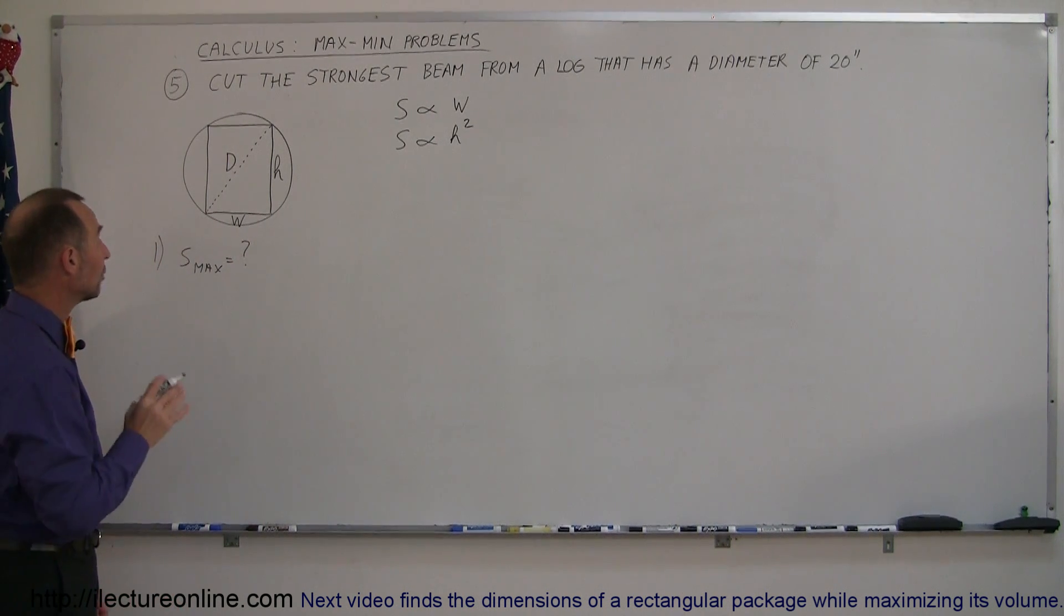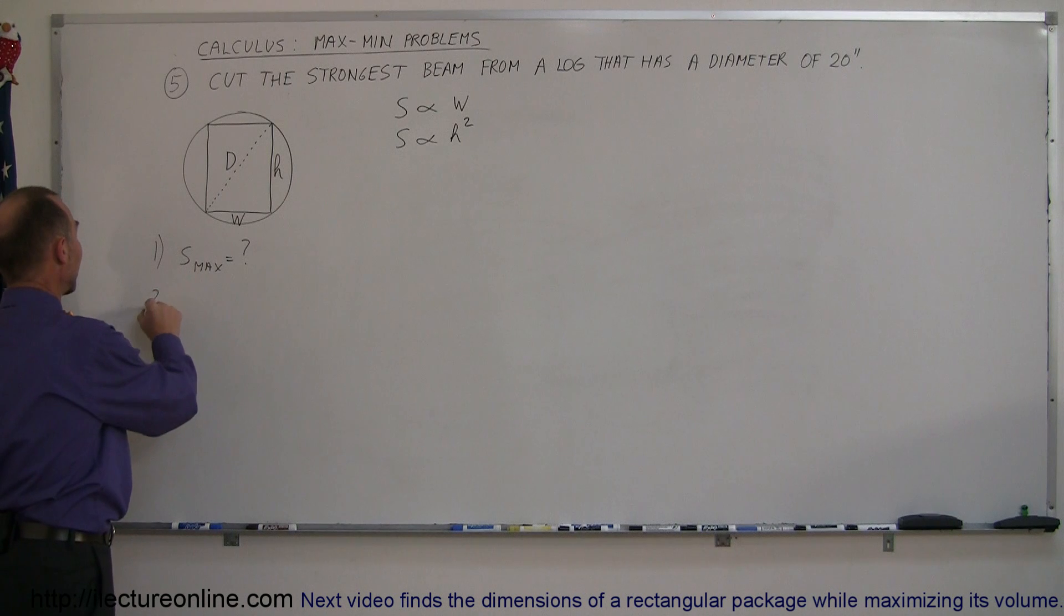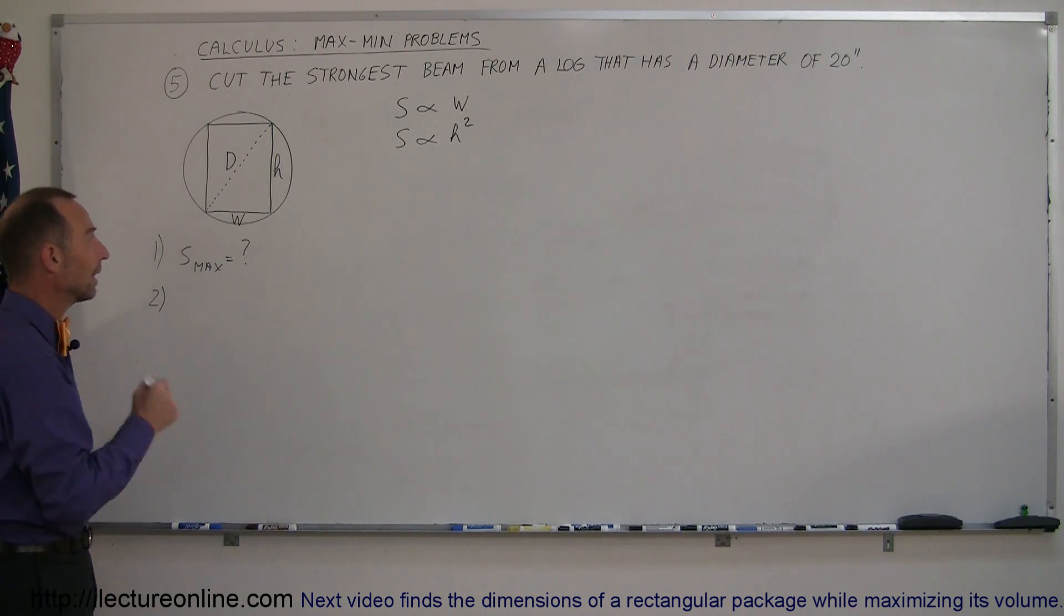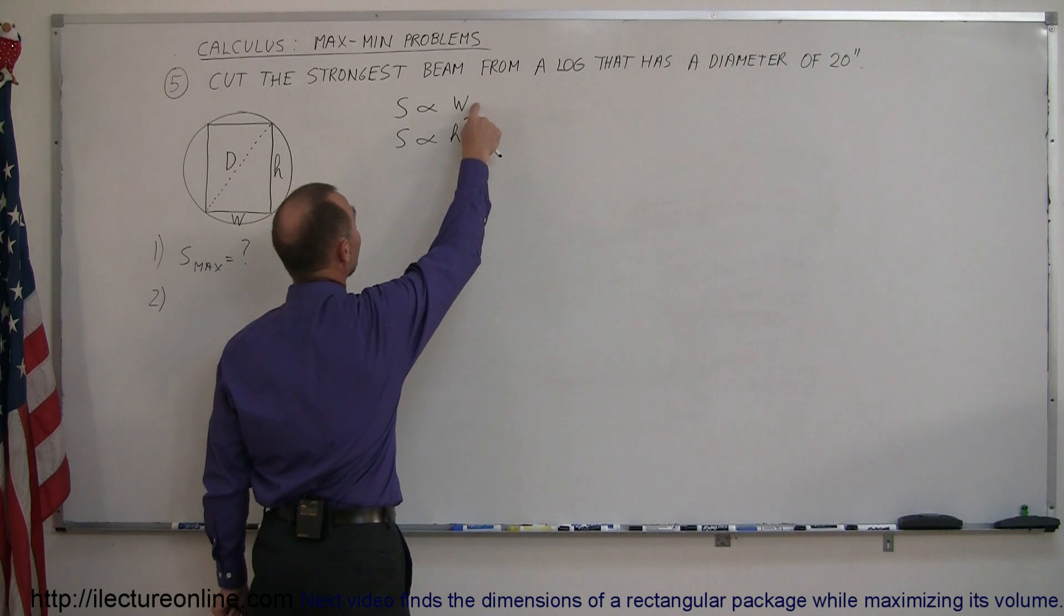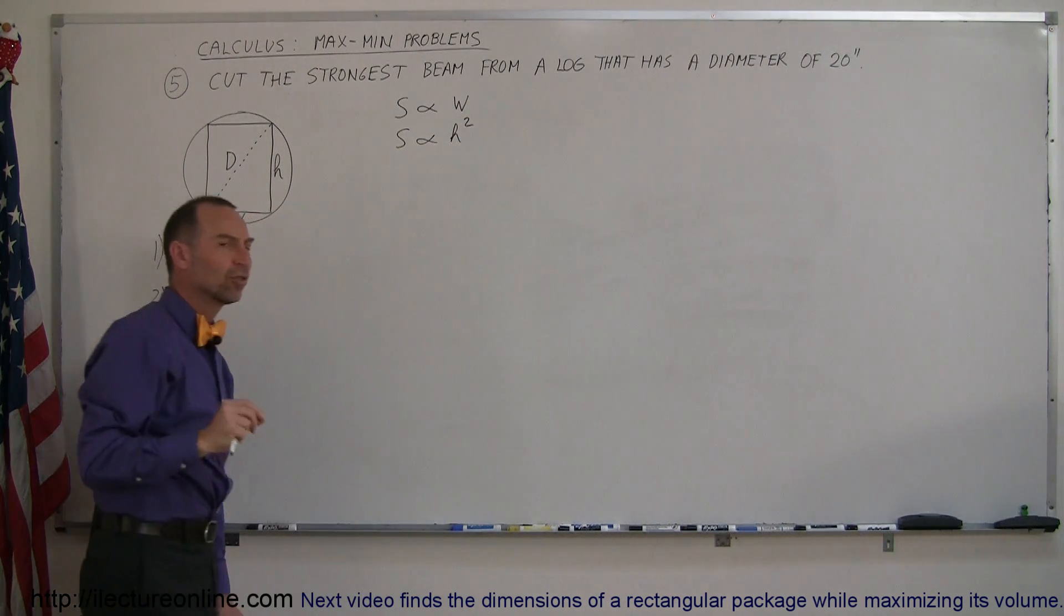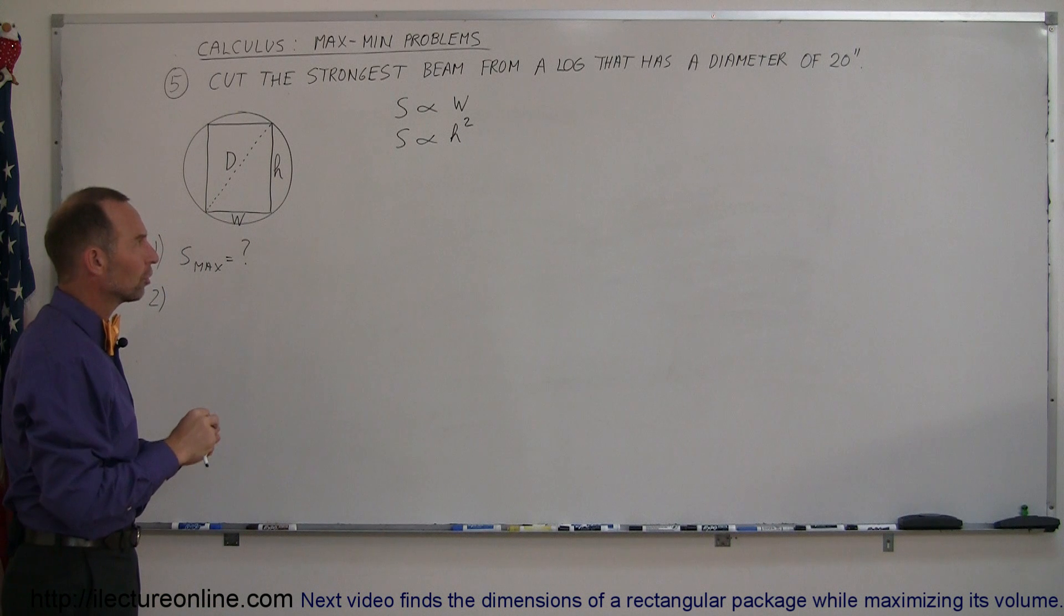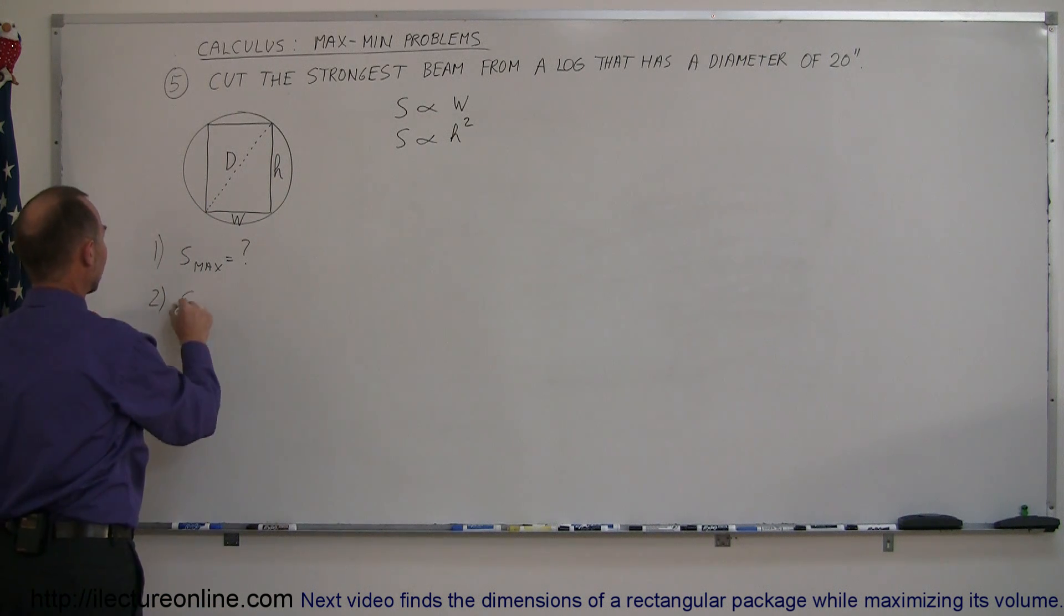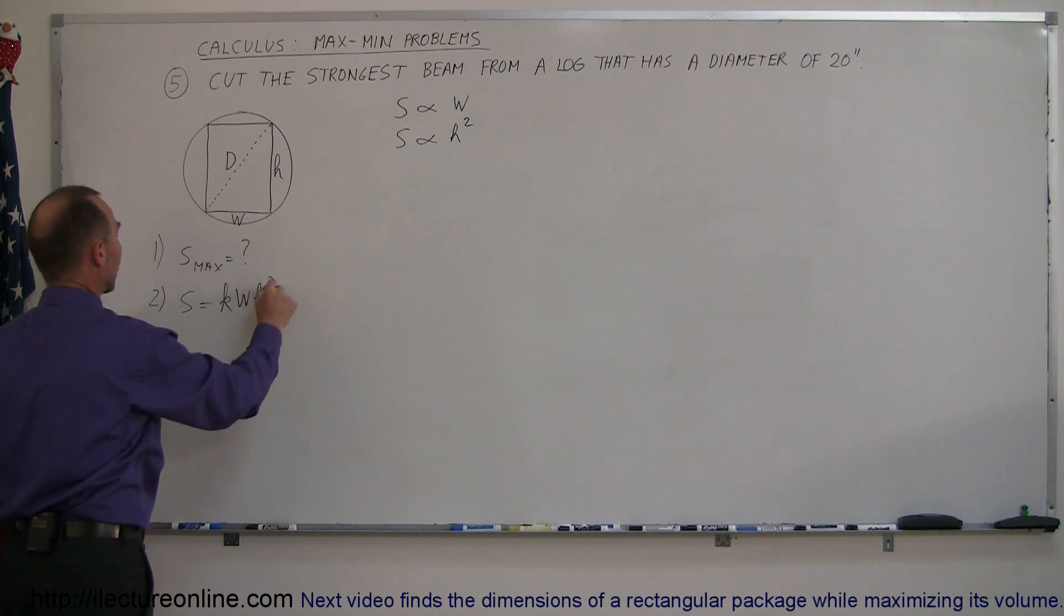Once you have that, we now need an equation to define the strength in terms of the width and the height. So since it's linearly proportional to the width and proportional to the height squared, we still need a constant of proportionality to turn it into an equation. And so S is equal to some constant—let's call it k—times the width times the height squared.